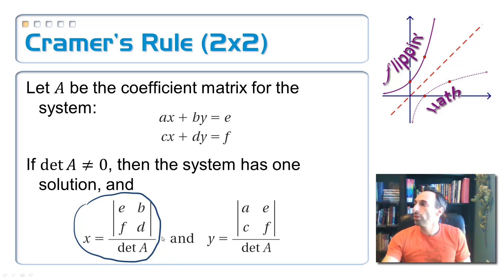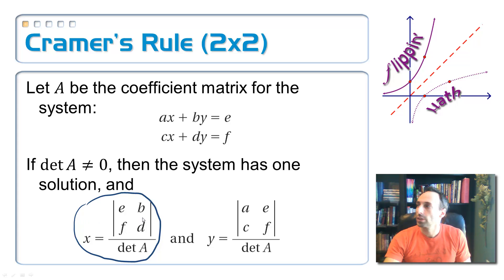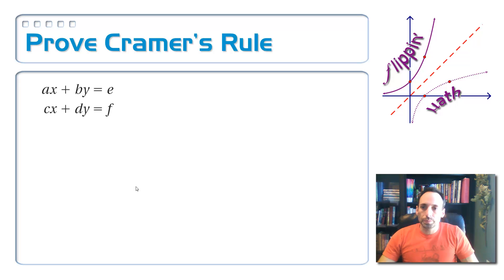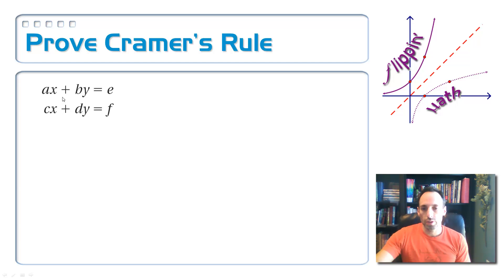The way this proof is going to go is I'm going to prove it another way. I'm going to find the value of x through elimination, and then match it up to what I would get if I solved it using Cramer's Rule, and see if they match. If they match, I've just proven it. So using elimination, we're going to solve this for x, which means I need to eliminate the y's.